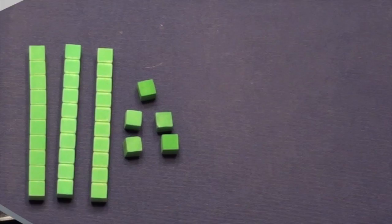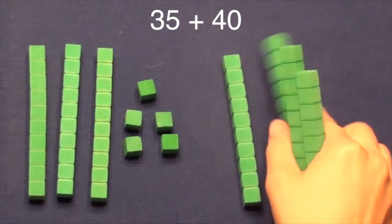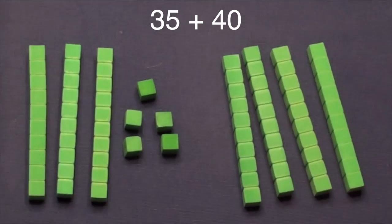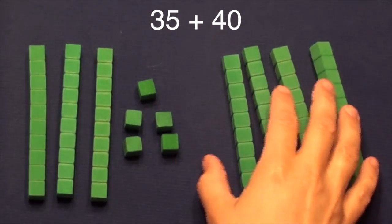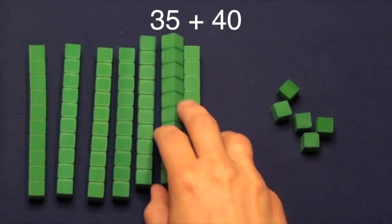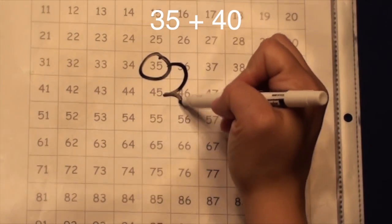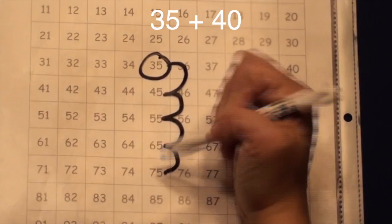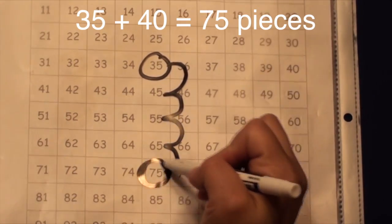Let's try solving this number sentence: 35 pieces plus 40. Since 40 has 4 tens, we will add 4 tens to the tens column. 3 tens plus 4 tens equals 7 tens. 75 pieces of gum.